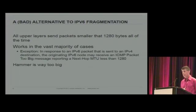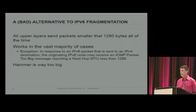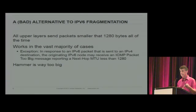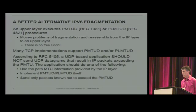We have some alternatives to IPv6 fragmentation. One bad alternative is to just never send a packet bigger than 1280 bytes. This works in the vast majority of cases — I can only think of one case where it doesn't work, where a middle box translating to IPv4 might send back a packet-too-big message with an MTU of less than 1280. This works in most cases, but it's a hammer that's way too big. A better alternative is to have upper layer protocols execute path MTU discovery or packetization layer MTU discovery procedures.